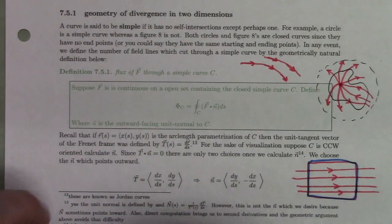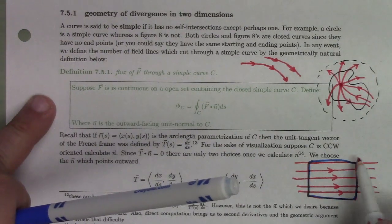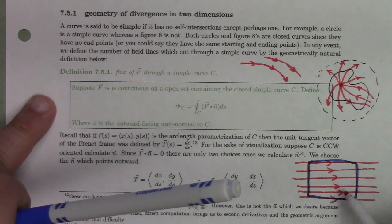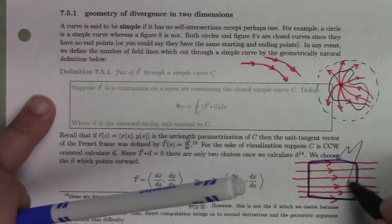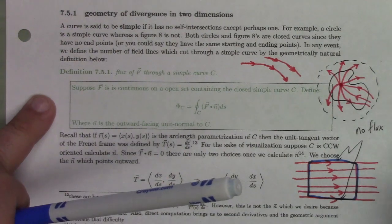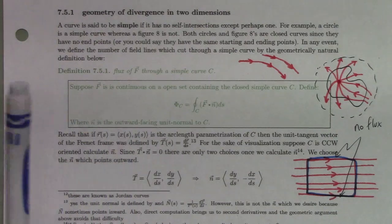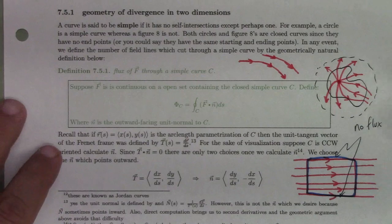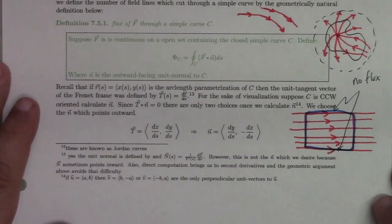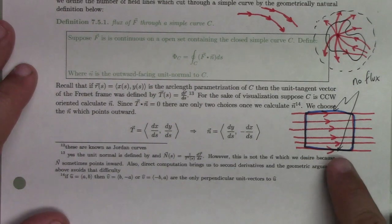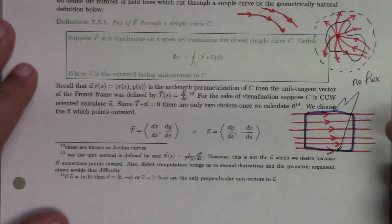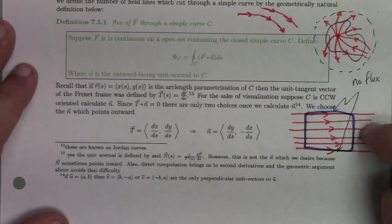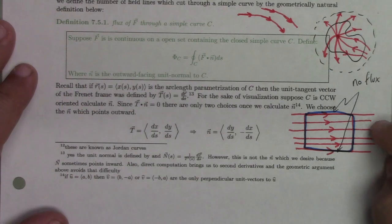The flux of a vector field in the plane is measuring how many integral lines pierce the curve per arc length. You could use the density of lines to indicate the magnitude — the stronger the vector field, the more dense the lines, and the larger the flux if they pierce it appropriately. The way to define flux is simply: take the dot product of the vector field with the outward pointing normal and integrate with respect to arc length. Note that the outward pointing normal is not necessarily the same as the Frenet normal, which points toward the center of the radius of curvature.